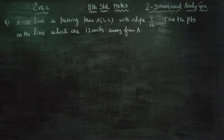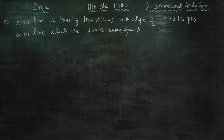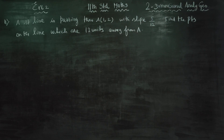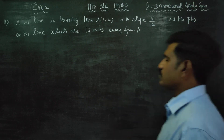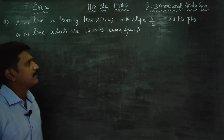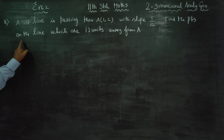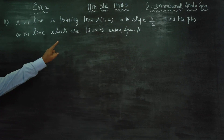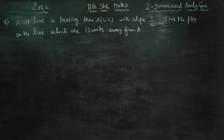Dear 11th Standard Students, I am Metro Karanagaran. In exercise number 6.2, a straight line is passing through A(1,2) with slope 5/12. Find points on the line which are 13 units away from A.